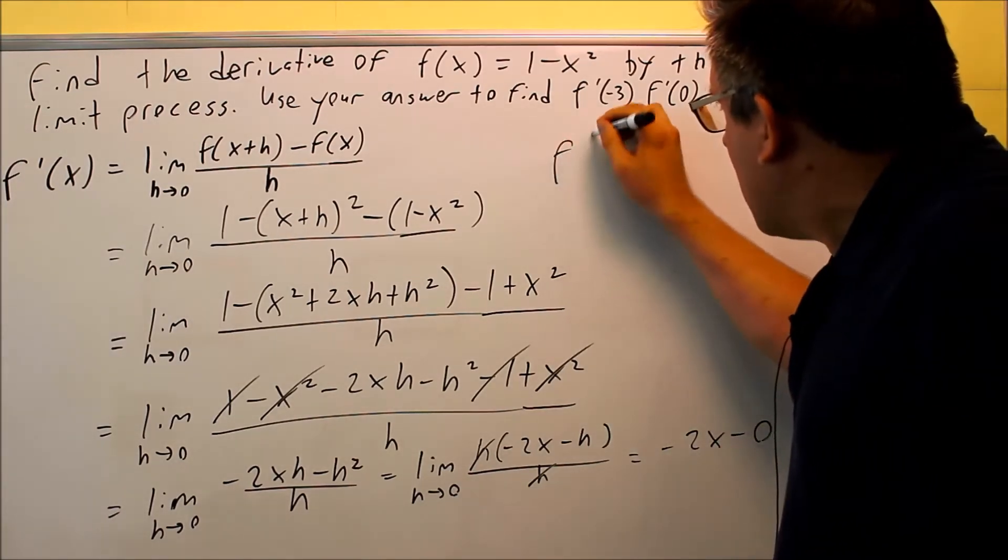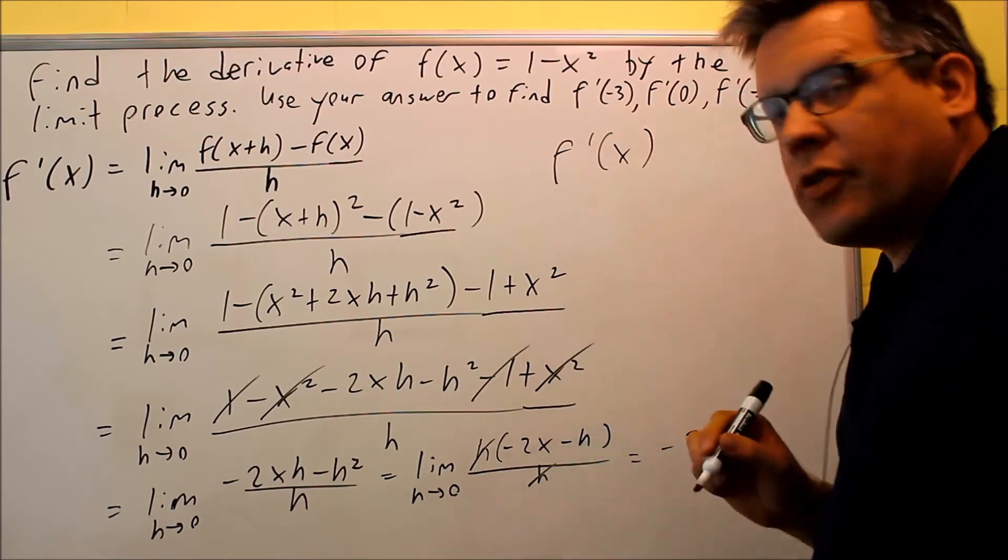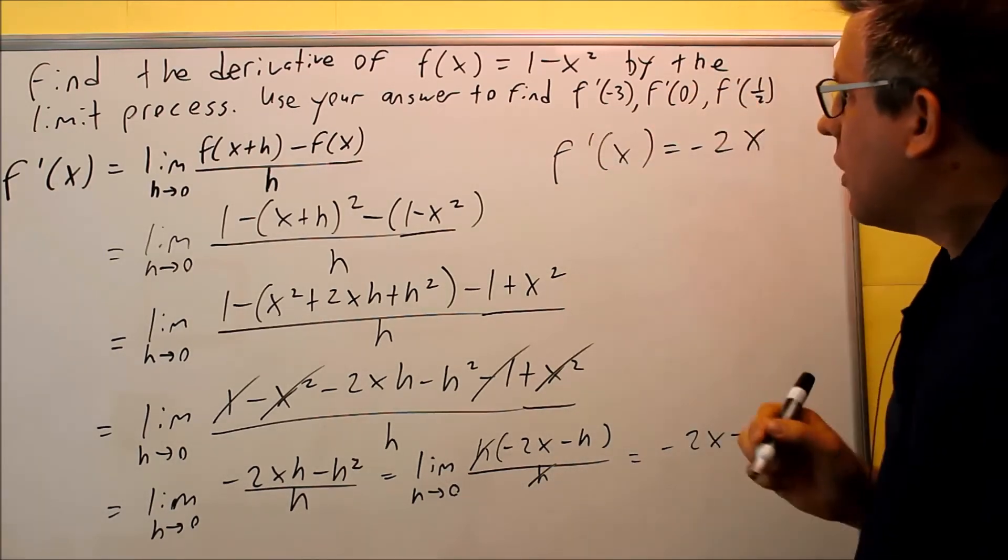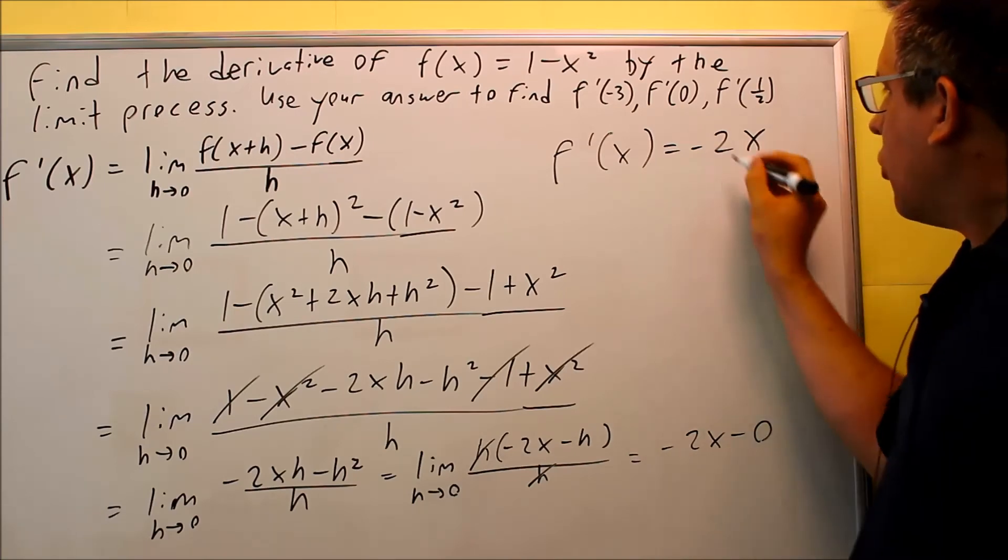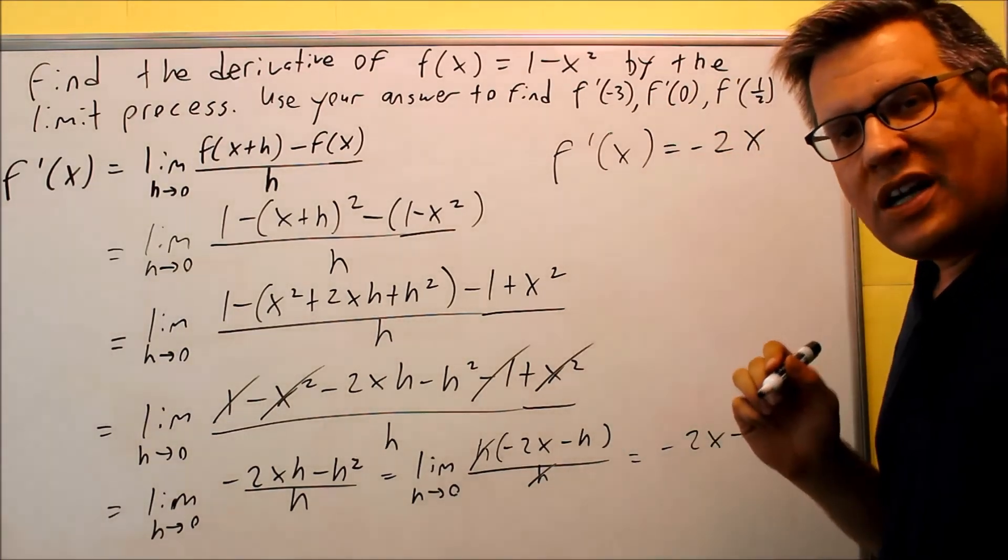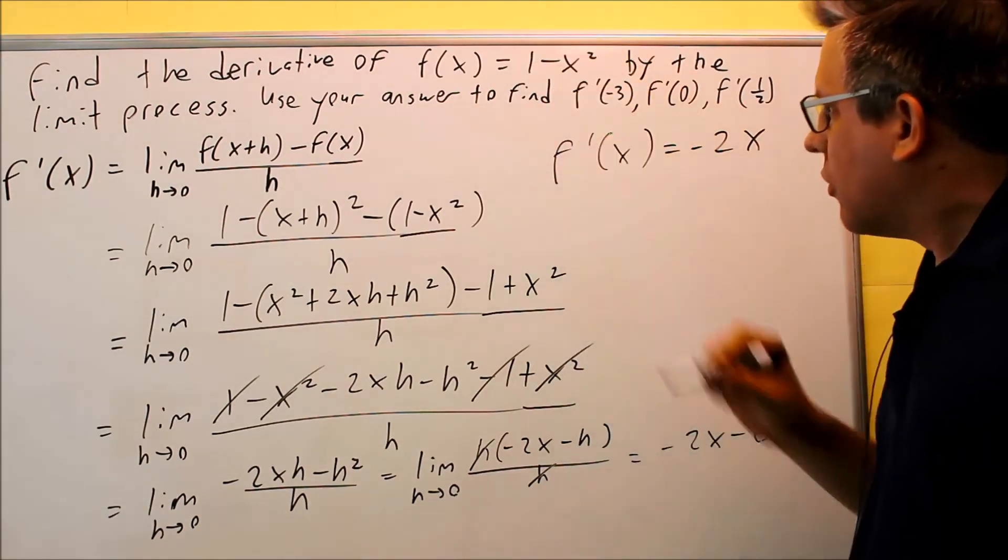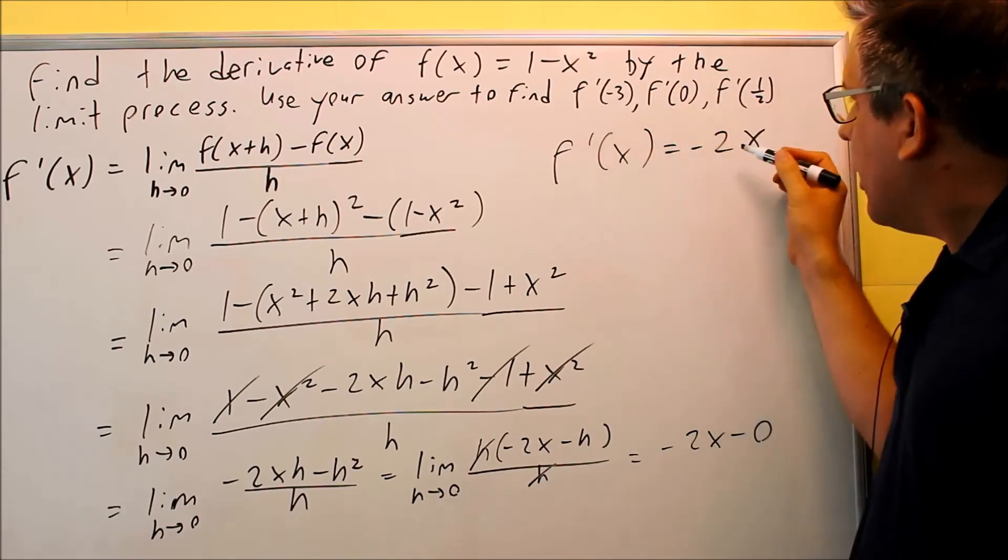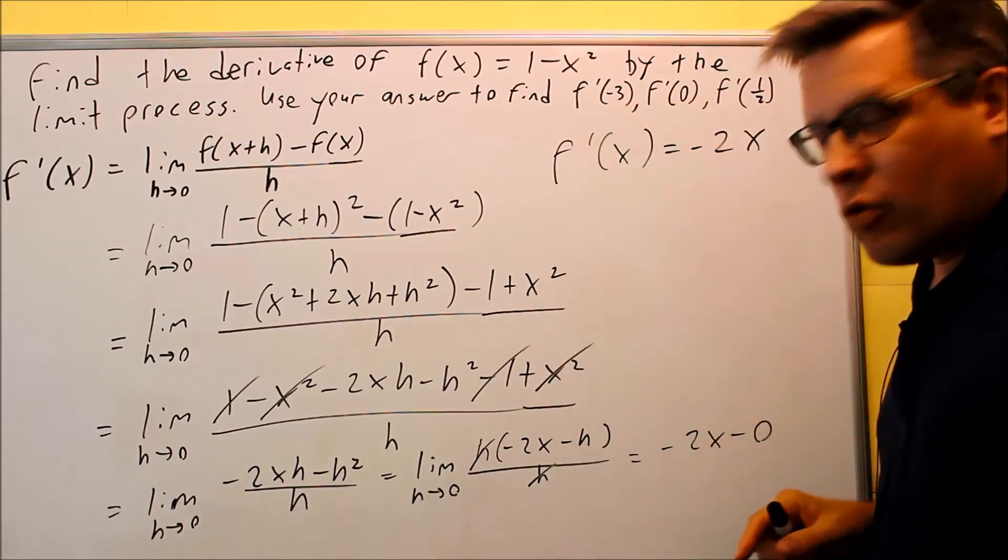Here's the proper notation: you're going to write the derivative of x with that notation, and that's going to equal negative 2x. So what this means is that this is an expression for me to find the slope at any place on that curve, 1 minus x squared.